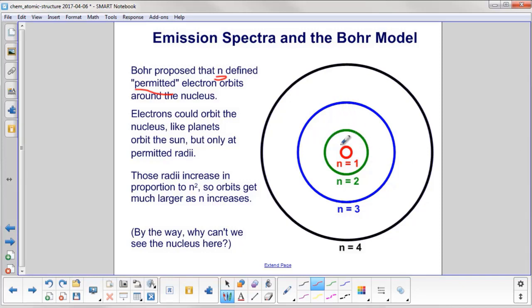For example, you've got this first orbit here, n equals 1. So that's an electron orbit. Here's the question, why can't we see the nucleus? Well, it's really incredibly tiny, way, way smaller than that little dot.